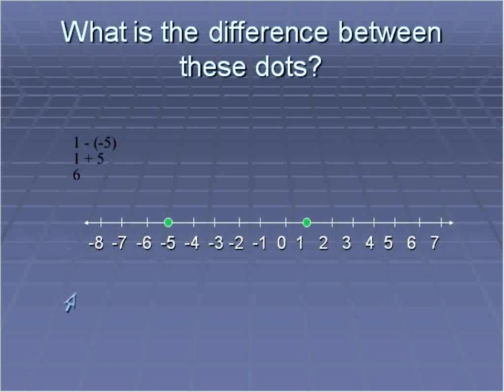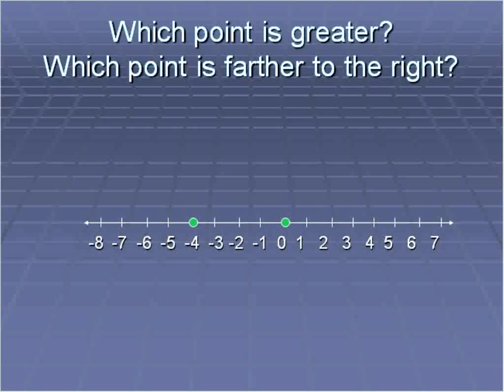Another reason number lines are helpful, not only in illustrating the difference between numbers, but also in illustrating which number is greater. Sometimes it's challenging when you have a number, like for example, negative 4 and 0. Let's write this down here. If we're just asked which of these points is greater, negative 4 or 0, sometimes that's confusing to people because 4 is bigger than 0.